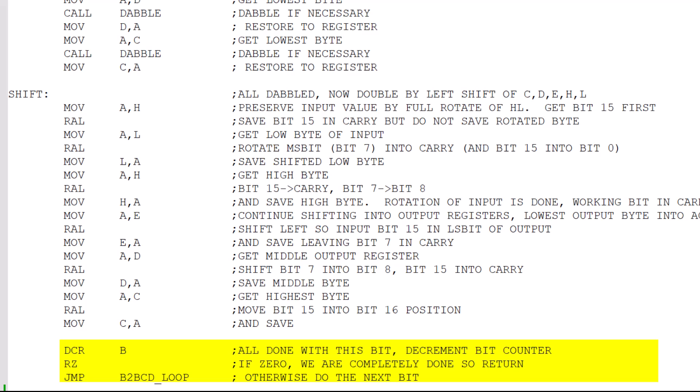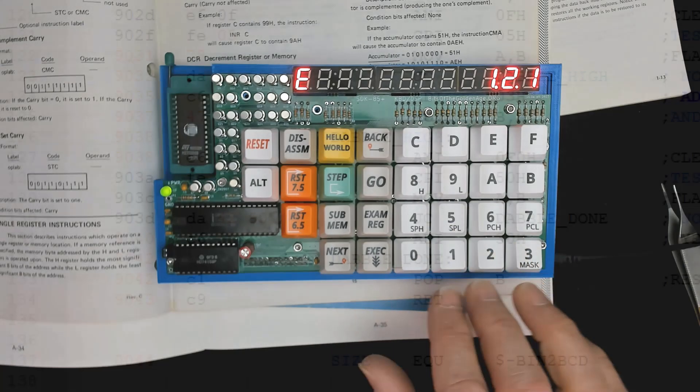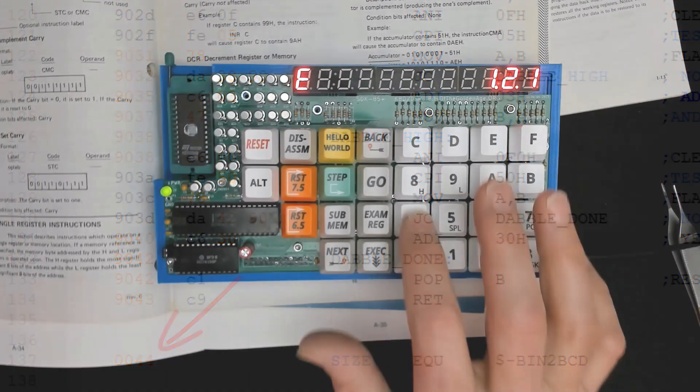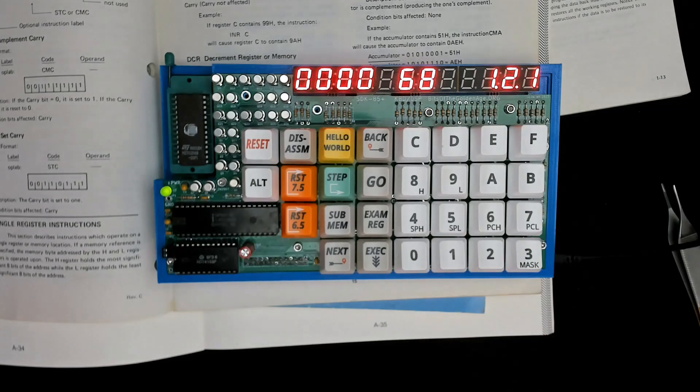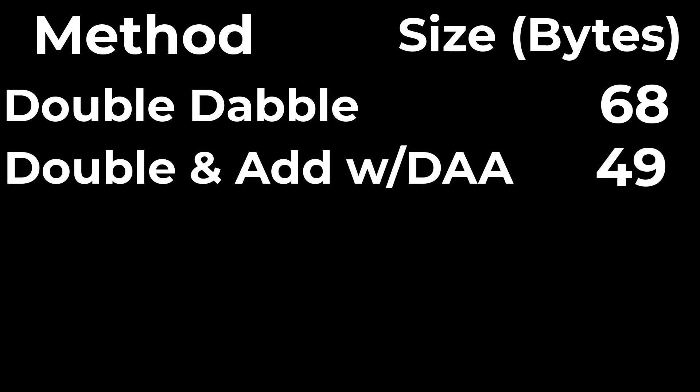So how did we do on the byte count? I have that program written again in this little SDK so all we have to do is put in a value and it says here at the bottom the double dabble took 44 bytes. So 44 bytes is 68 decimal. For comparison, the same utility using the double and add and utilizing the DAA instruction took 49 bytes. So even with a handful of tricks the double dabble method brought to the table, if the processor has a DAA instruction, then it gives the win to the double and add method.